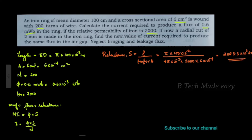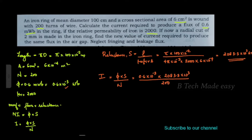We have a reluctance equal to 2083.3 into 10 raise to 3 ampere turns per Weber, and the current is equal to φ into S divided by N. If we solve this equation with φ equal to 0.6 into 10 raise to minus 3 and S equal to 2083.3 into 10 raise to 3, divided by N equal to 200, the answer is 6.249 amperes.